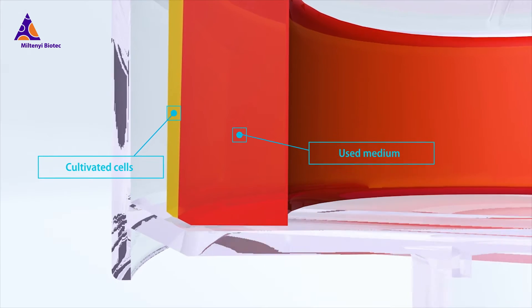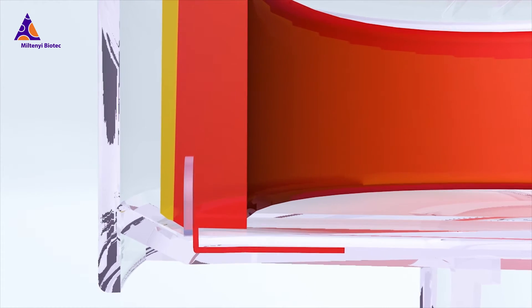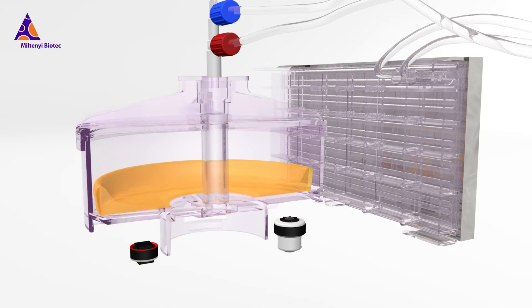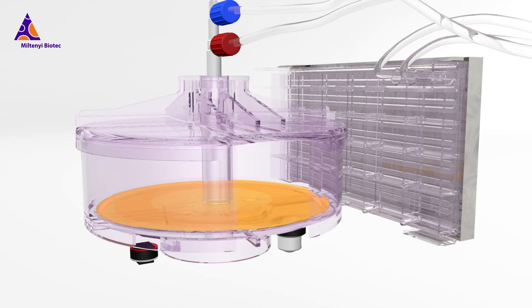At pre-programmed times, used medium is extracted from the cultivation chamber, leaving the cultivated cells untouched. Fresh medium is then added to the cell sample, allowing further cell cultivation to occur.